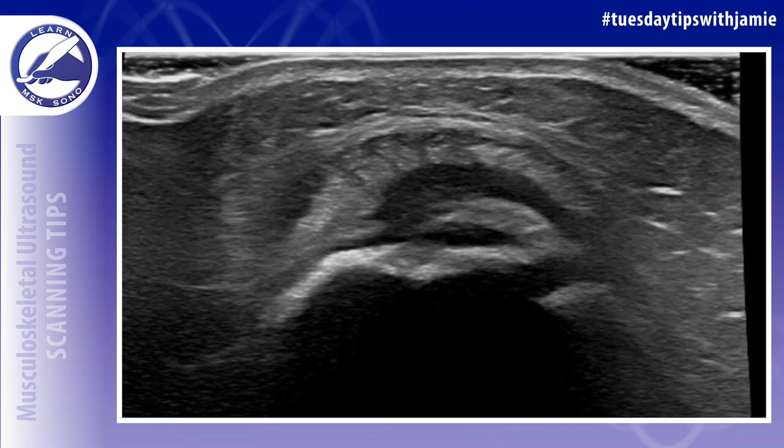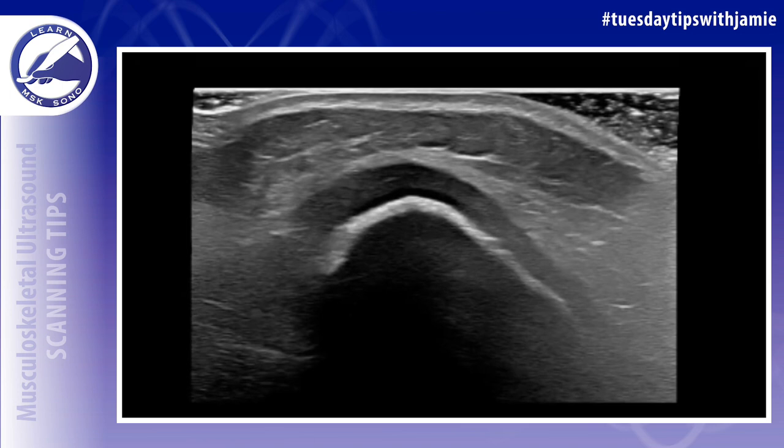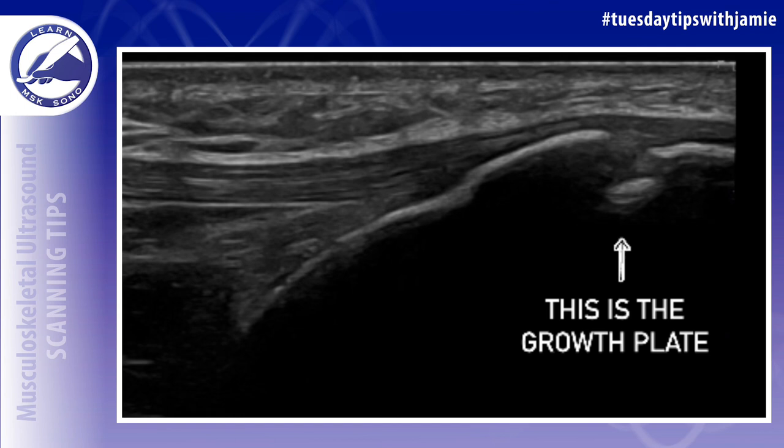Until the patient is finished growing, there will be growth plates visualized at the end of the long bones. This new bone formation consists of unossified cartilage. As the body grows, the tendons can pull on this cartilage at the tendon attachment sites, causing irritation. Symptoms will typically resolve when the bones are finished growing.